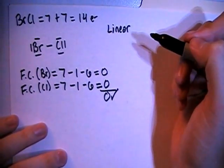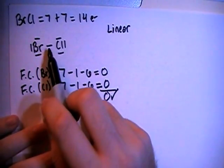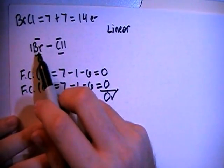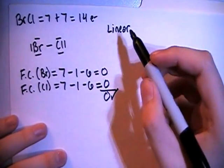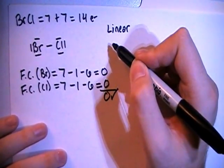And in terms of hybridization, looking at either of these atoms as the central atom, they both have 1, 2, 3, 4 electron groups, which means we need 4 hybrid orbitals.